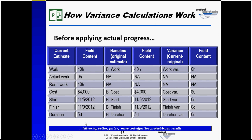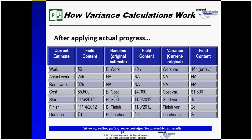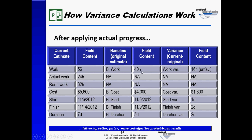As we begin to update our current estimate fields, we will see variances be generated automatically. In this case, this task was updated with actual work of 24 hours and remaining work of 32 hours. When we add 24 and 32 together, which Microsoft Project will do, we get a new estimated work of 56. The baseline is 40, so the variance, which is now unfavorable, is 16 hours, because it's 16 hours higher than the original baseline work estimate.